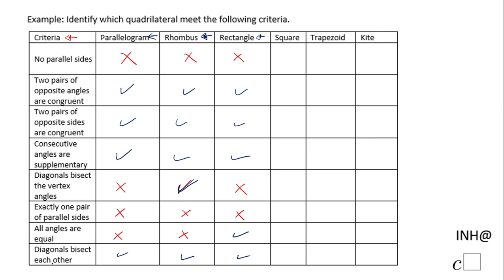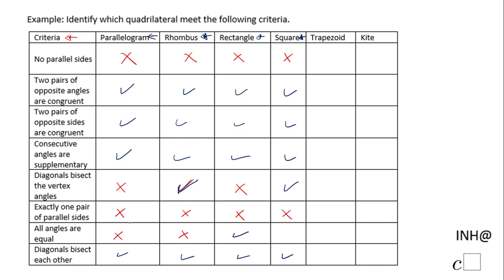Now the square. The square is a special type of parallelogram, and also a special type of both rectangle and rhombus, so it inherits all those properties. 'No parallel sides' — obviously doesn't work; a square has two pairs of parallel sides. 'Diagonals bisect the vertex angles' — yes, that works, same as a rhombus. 'Exactly one pair of parallel sides' — false. 'All angles are equal' — true, because it is also a rectangle; all angles are 90 degrees.